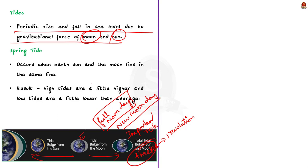We know that every coastal area experiences two high tides and two low tides every day due to the rotation of the earth. But during spring tide, as the gravitational pull of the sun and moon adds up, the high tides are a little higher and low tides are a little lower than average.